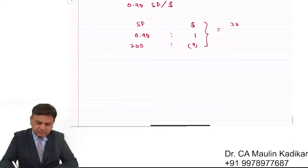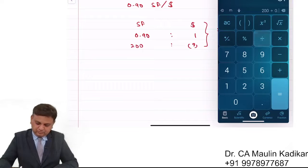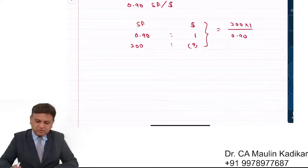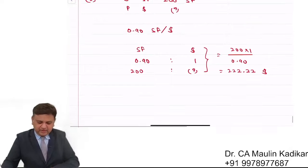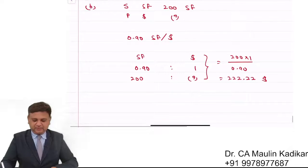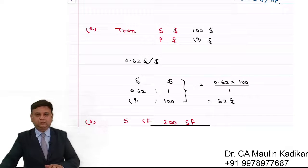So the calculation is 200 into 1 divided by 0.90, that is 222.22. This is the amount of dollar that you can buy with 200 Swiss Francs. Please write the answer. 222.22, that is the answer.